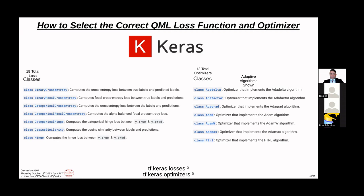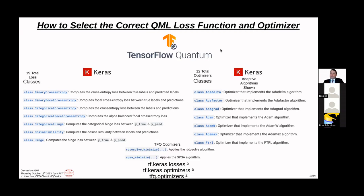Keras is basically TensorFlow — you see tf.keras.losses or tf.keras.optimizers. What Keras has is very similar to PyTorch, just a little less. In general, you can get similar performance whether you're Torch-based or TensorFlow/Keras-based. There are 19 total loss classes and 12 total optimizers with Keras, including adaptive algorithms.